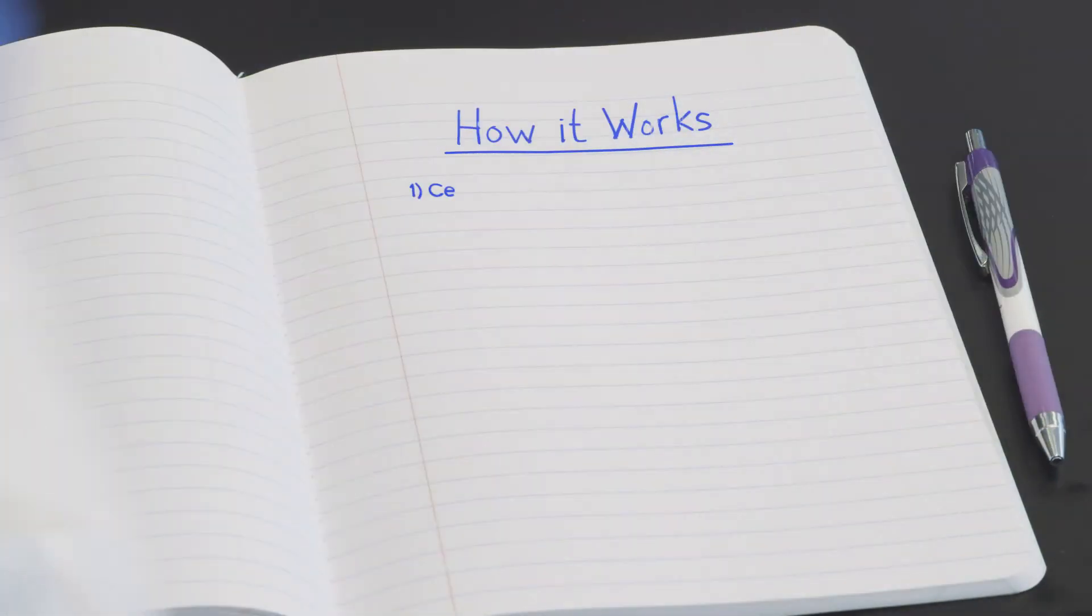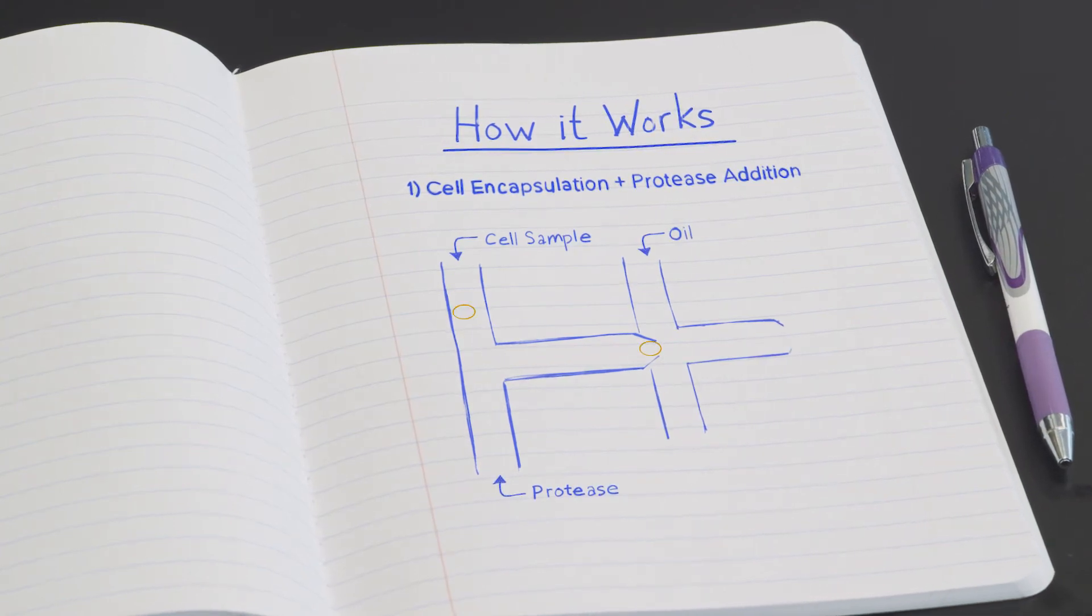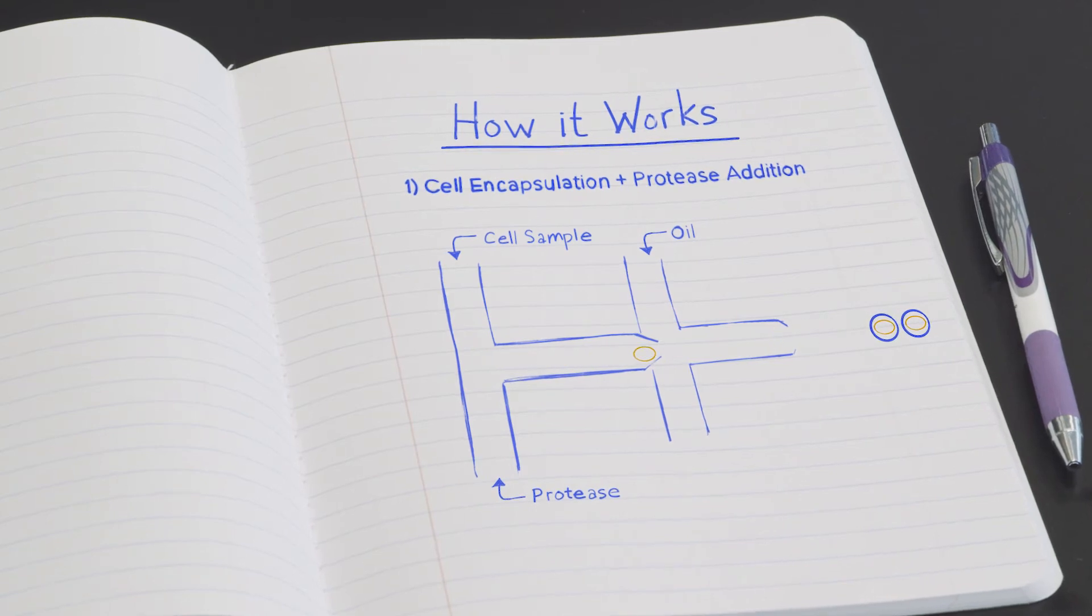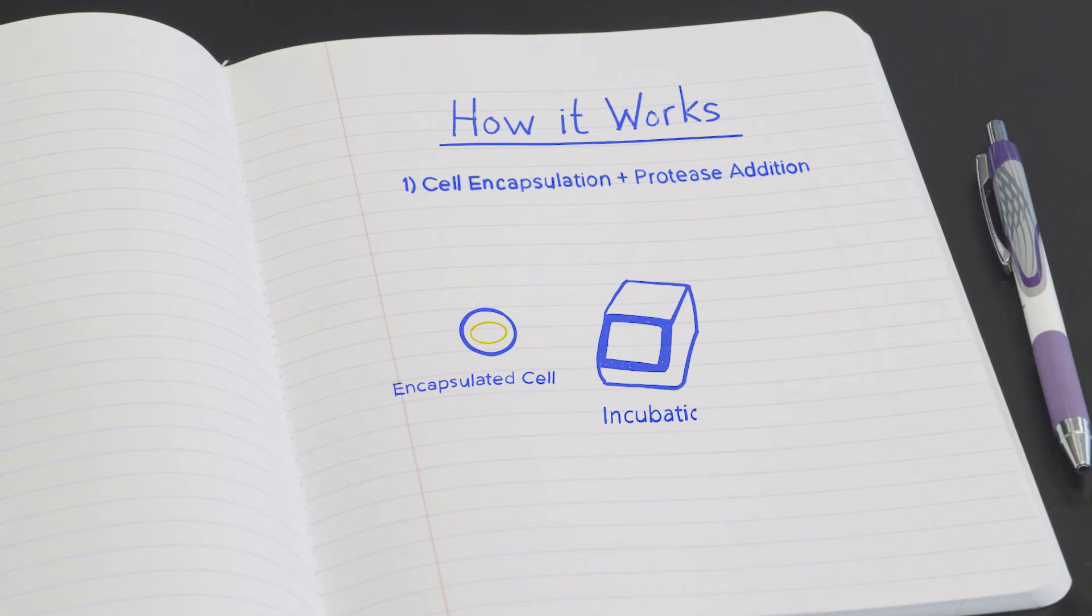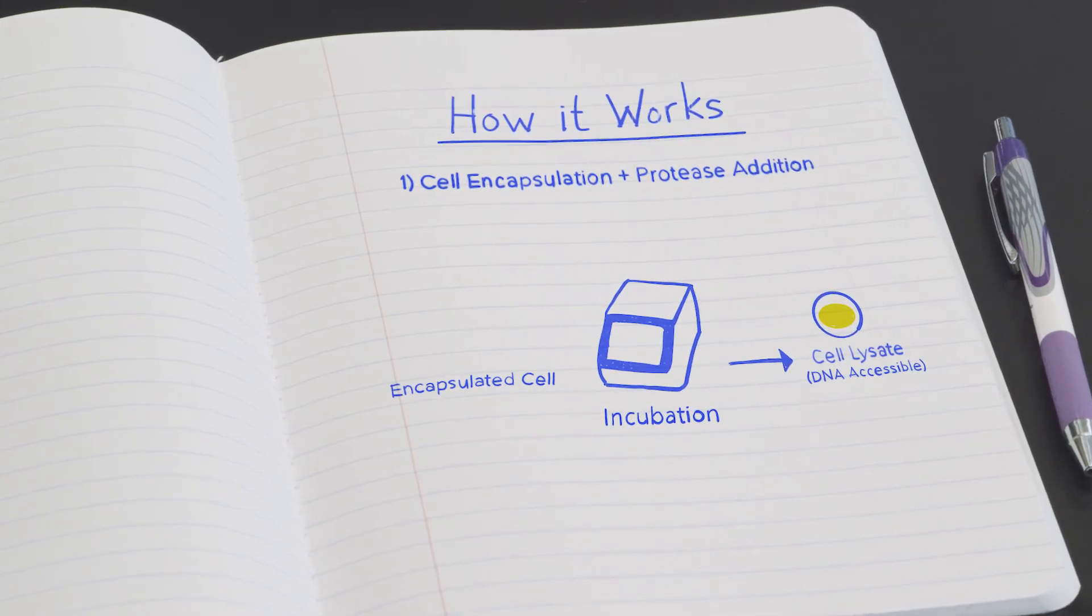Here's how it works. First, Mission Bio Tapestry uses droplet microfluidics to partition thousands of cells into droplets, enabling thousands of individual reactions simultaneously. Once the cells are encapsulated, they are lysed and genomic DNA is made accessible after enzymatic digestion.